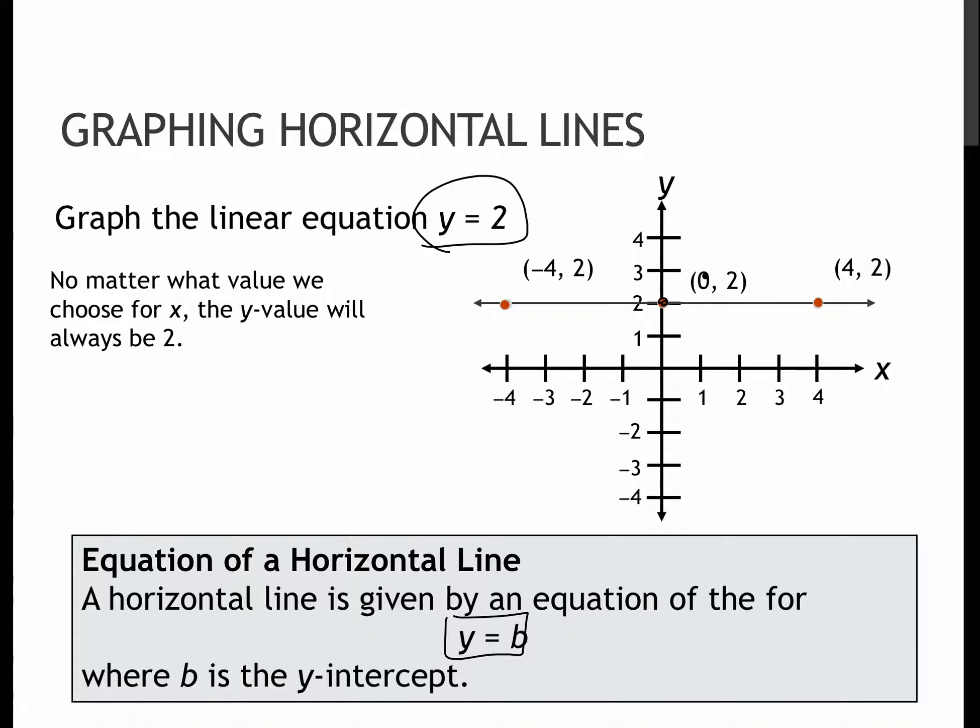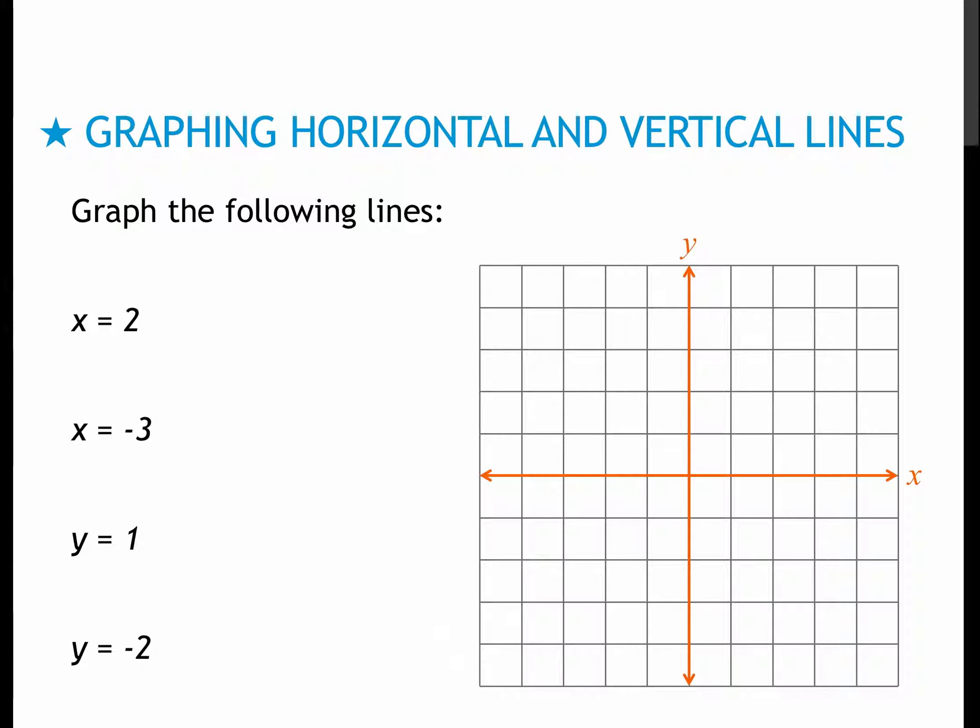So these don't have any kind of slope, because they're either vertical, which means they have an undefined slope, or horizontal, which means they have a slope of 0. We'll talk more about slope in the next lesson.